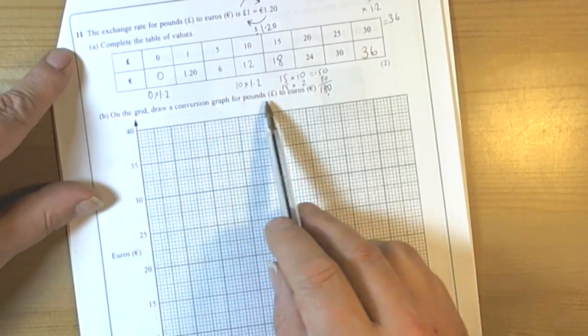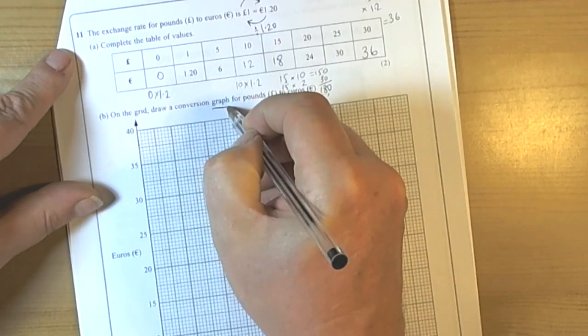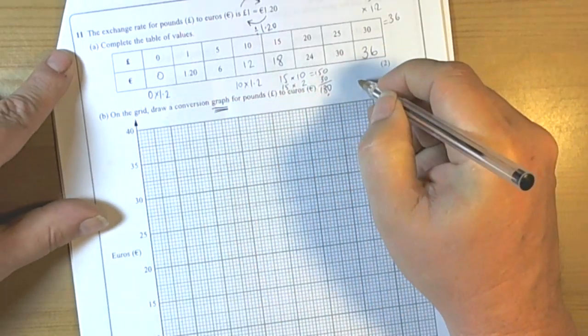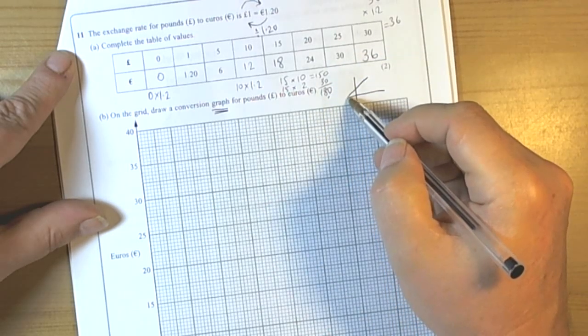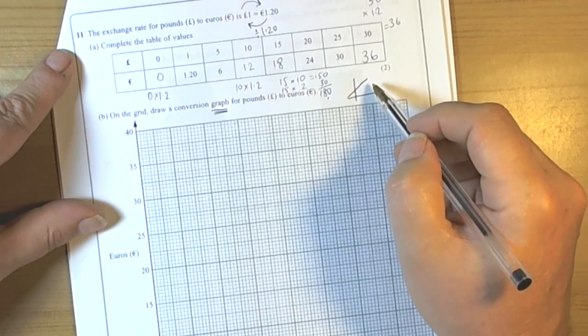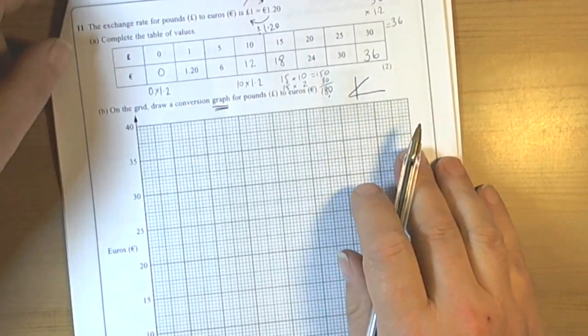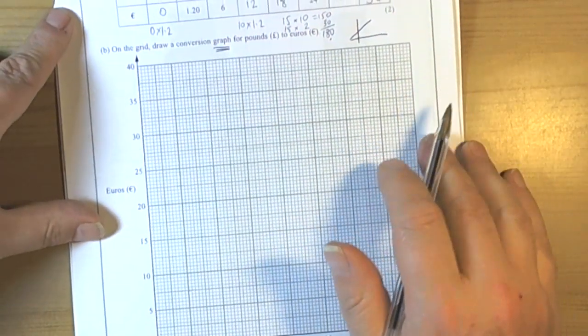The question says draw a conversion graph. Be really careful here, it's asking you for a graph. And graphs always have lines or bars or something's been drawn on, not just the crosses of the coordinates. So be very careful you do finish off by drawing a line.